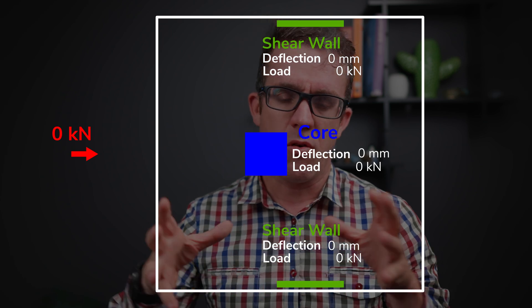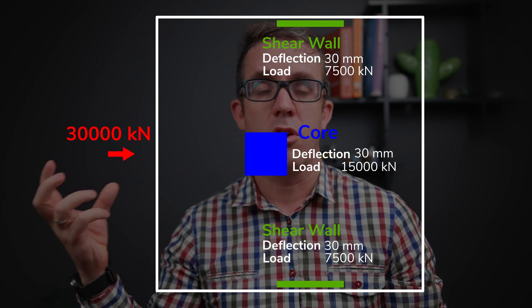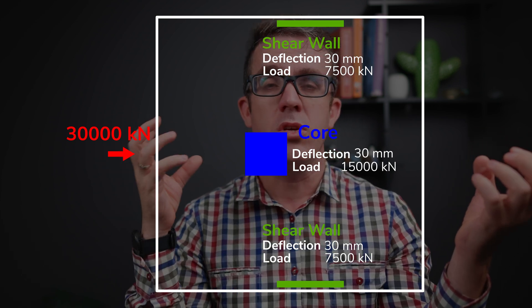Getting back to lateral load paths: there's often confusion about which elements take which load when you have shear walls, core walls, and bracing frames in multiple locations. Distribution is again about the stiffest path first. For elements pushing in the same direction, load distributes based on how much each element deflects — the sum of element forces must equal the total lateral force. Additional complexity arises from slab rotation: elements further out may resist more load due to relatively less deflection, while elastic shortening means elements further away may take slightly less load as the load shortens before reaching them.